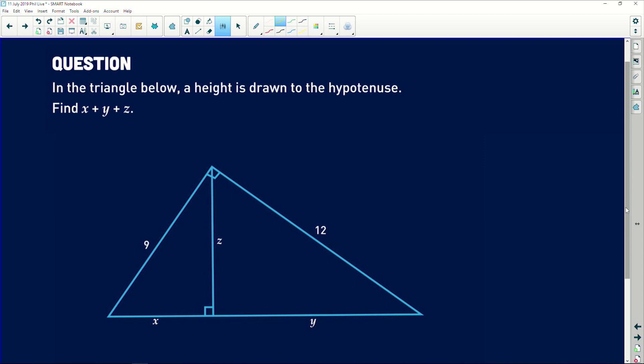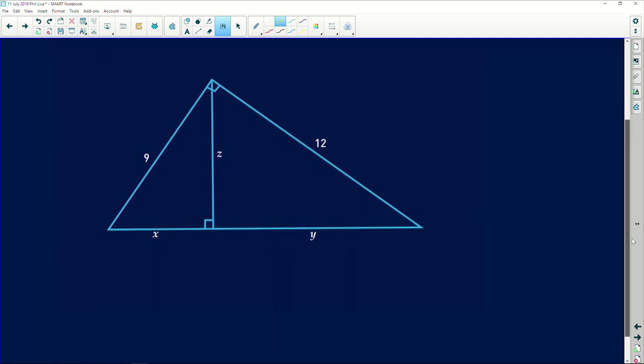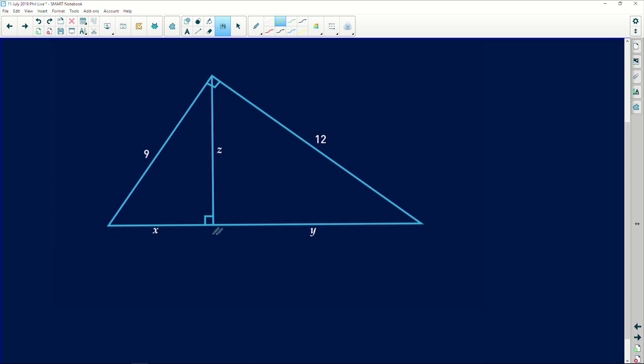Okay, this question is great. It involves similarity and some basic grade 9 math. Let's take a look. In the triangle below a height is drawn to the hypotenuse, so obviously that's this height over here. Find x plus y plus z. Initially I'm thinking how on earth do I find these numbers? Because obviously you want to try and use Pythagoras in this triangle, in this triangle, and in this triangle. But that makes no sense because there are two variables in this triangle and two in that one.